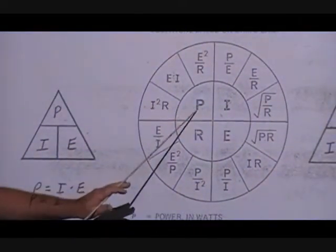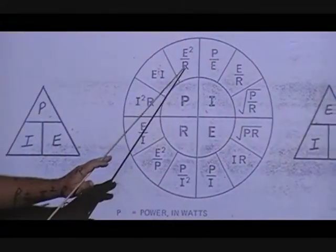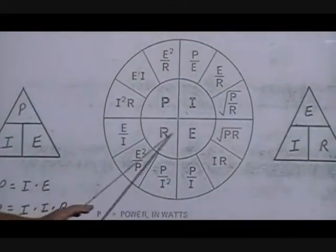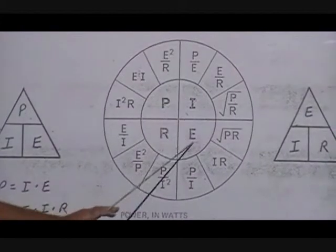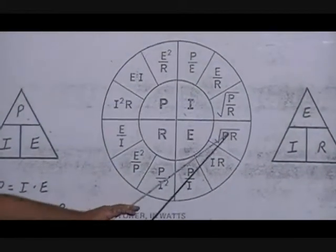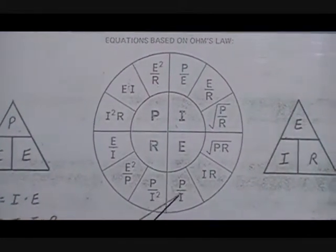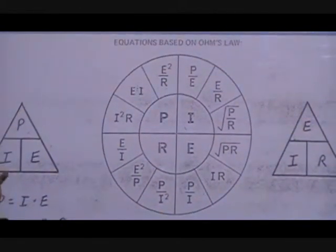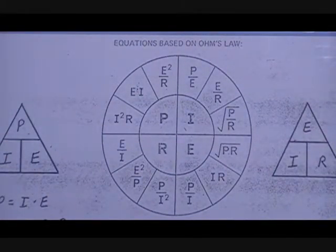If I have E, which is the voltage, E squared over R is equal to P. And it's the same way with the other parts of the circle too. But these are what you're trying to find, and this is what will help you get there by knowing which ones that you do have. If you have two, two of these, you can figure out all the rest of it for any circuit.